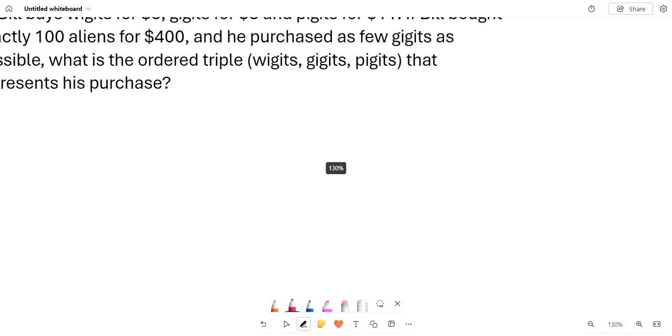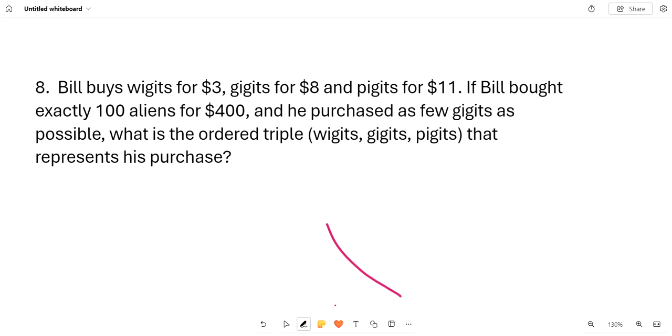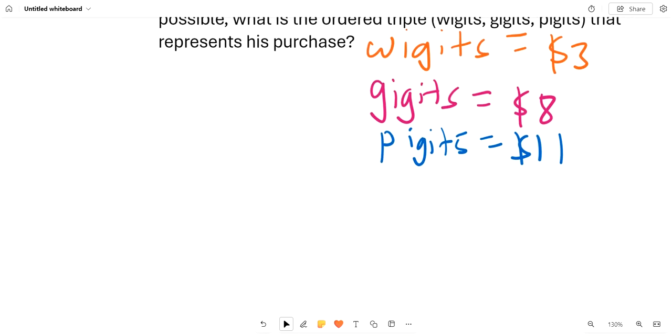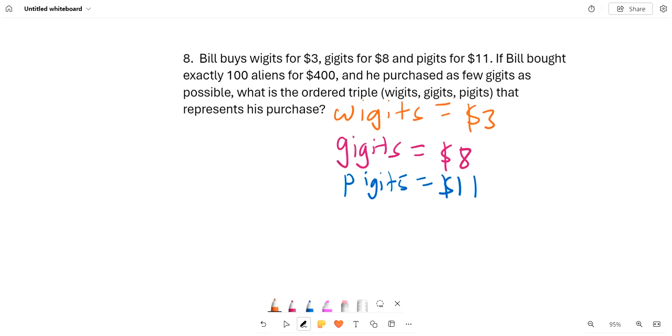We can see that if Bill buys widgets for $3, so let's say widgets equals $3, Gidgets equals $8, and Pidgets equals $11. Let's say that Bill buys all widgets, so that'd be $300 for 100 widgets.